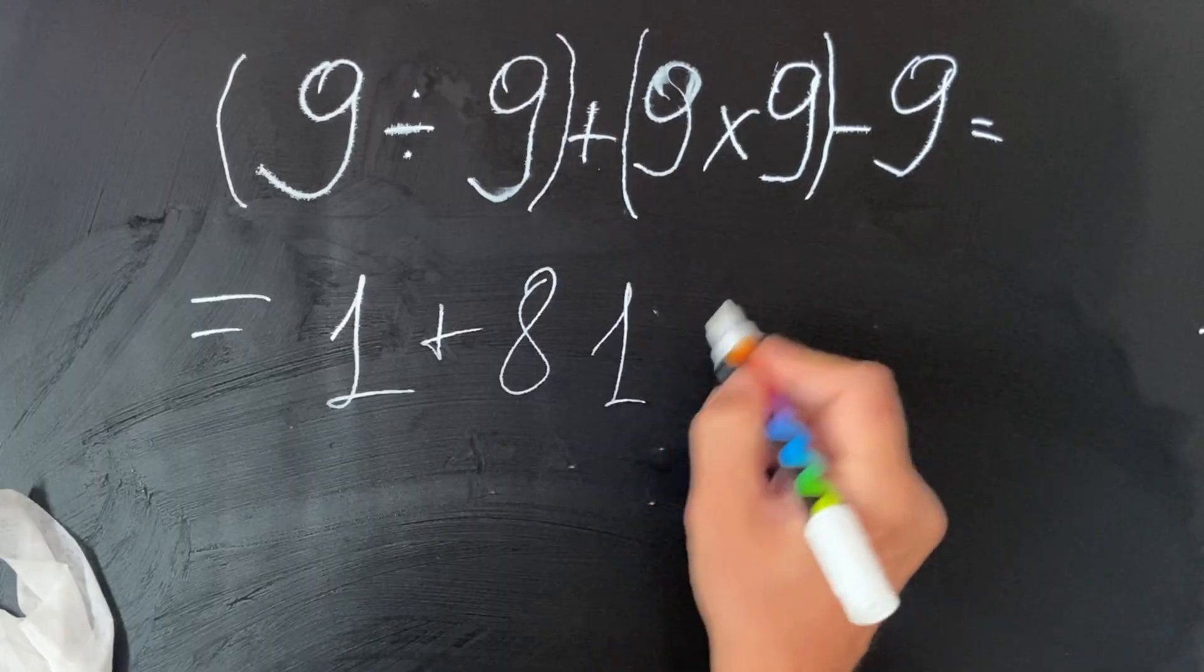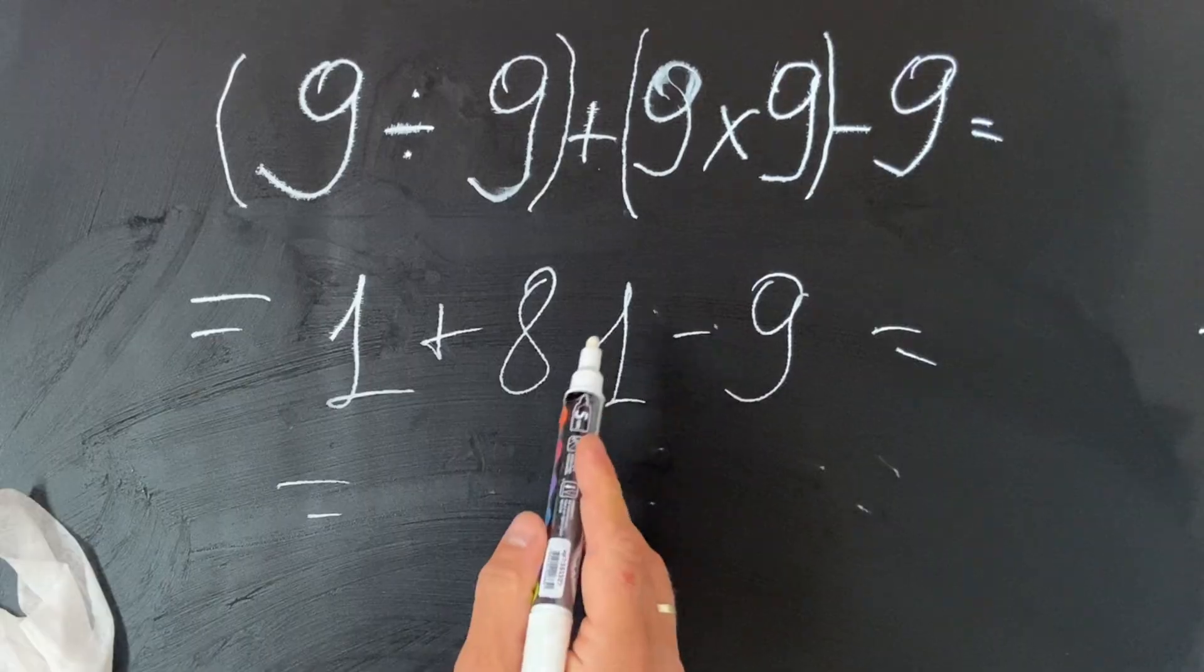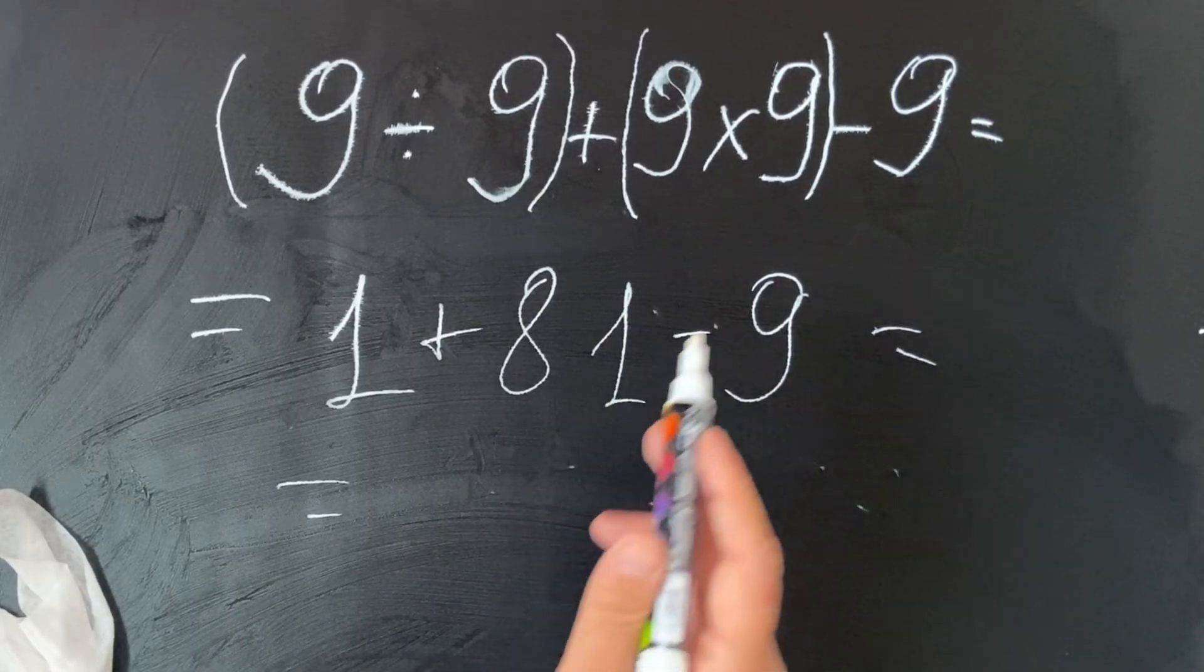The final answer would be 1 plus 81 minus 9, which equals 82 minus 9, equals 73.